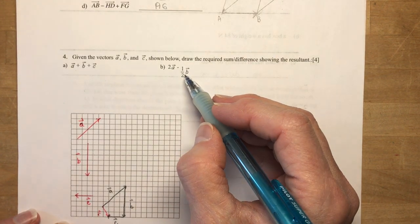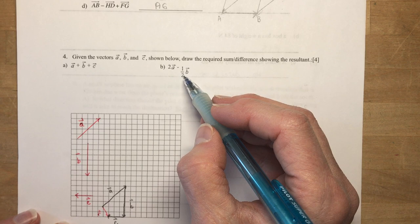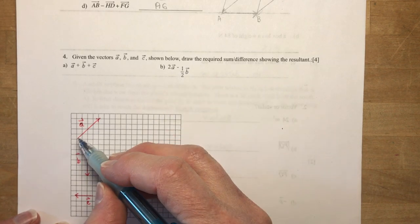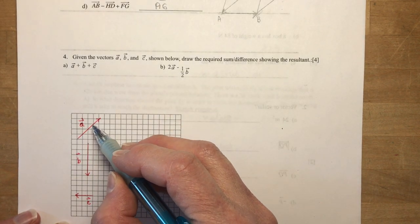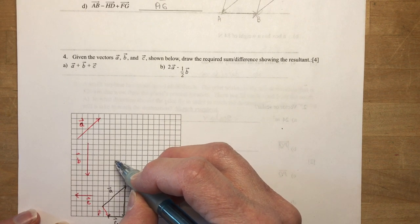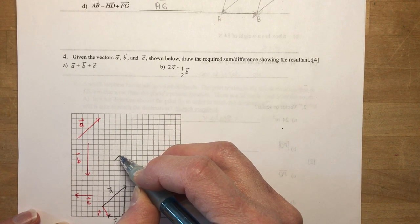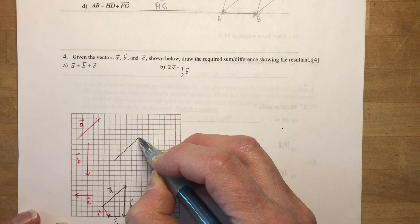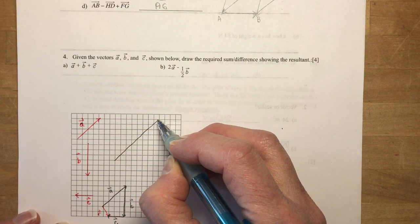The second one says 2A minus one half B. So 2A's. This went up. What did we say? 1, 2, 3, 4. So I need to go up 8. So let's go from here. It should be enough. 1, 2, 3, 4, 5, 6, 7, 8.